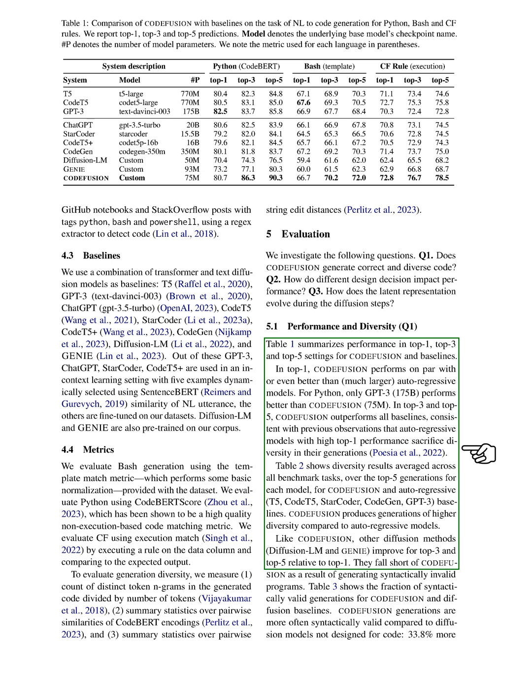We've also included a table showing the diversity results, averaged across all benchmark tasks, for the top-5 outputs of each model. Our system produces more diverse outputs compared to auto-regressive models.